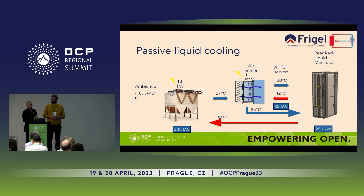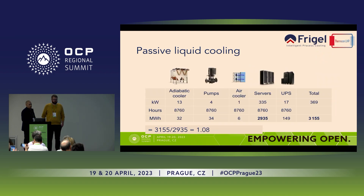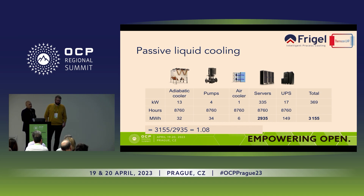The heat can also be reused for heating or different applications, which can be included in the design. Overall, the total power is 370 kilowatts, the server load is 355 kilowatts, and the PUE ratio is much higher — meaning very efficient.